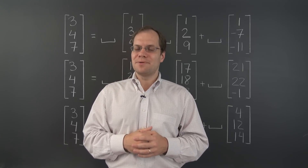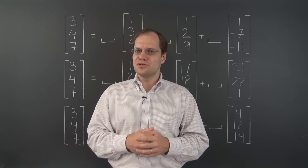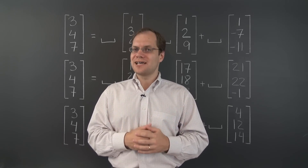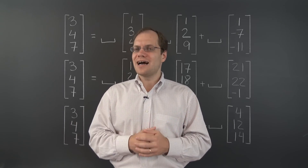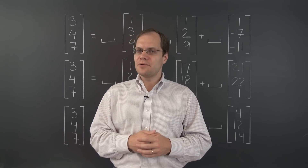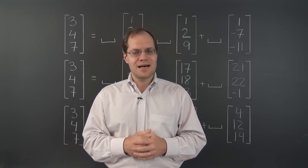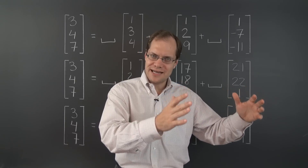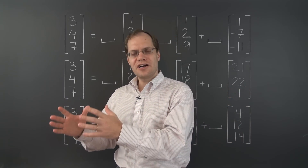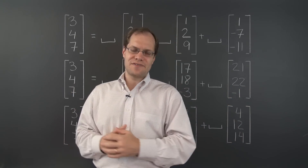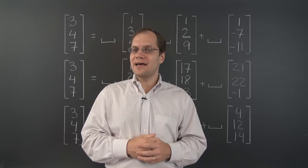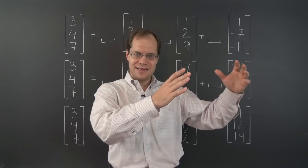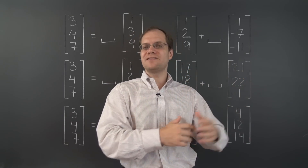We're in the midst of talking about decomposition problems that have no solutions. So far we have already considered a number of examples with all different kinds of vectors. In each case we were able to determine that decomposition is not possible by noticing a very special property that the decomposition vectors share and that the target vector does not satisfy. On that basis, we were able to conclude that the target vector cannot be represented by a linear combination of the decomposition vectors.